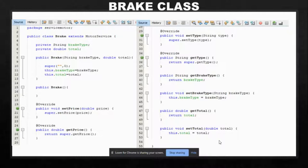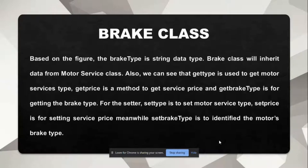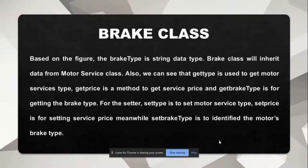Next is the brake class coding. Based on the figure, the brake type is a string data type. The brake class will inherit data from the motor service class. Get type is used to get the motor service type. Get price is a method to get the service price. And get brake type is for getting the brake type. For the setter, set type is to set the motor service type, set price is for setting the service price, and set brake type is to identify the motor's brake type.